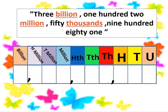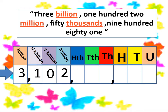Now we have this number in words and want to write it by digits: three billion, one hundred two million, fifty thousand, nine hundred eighty-one. We start from the left — three billion, so we put 3 in the billions home. In the millions home we have one hundred two, with zero in ten millions. In thousands, fifty thousand means we put zero in hundred thousands and write 50. In the last home, nine hundred eighty-one.